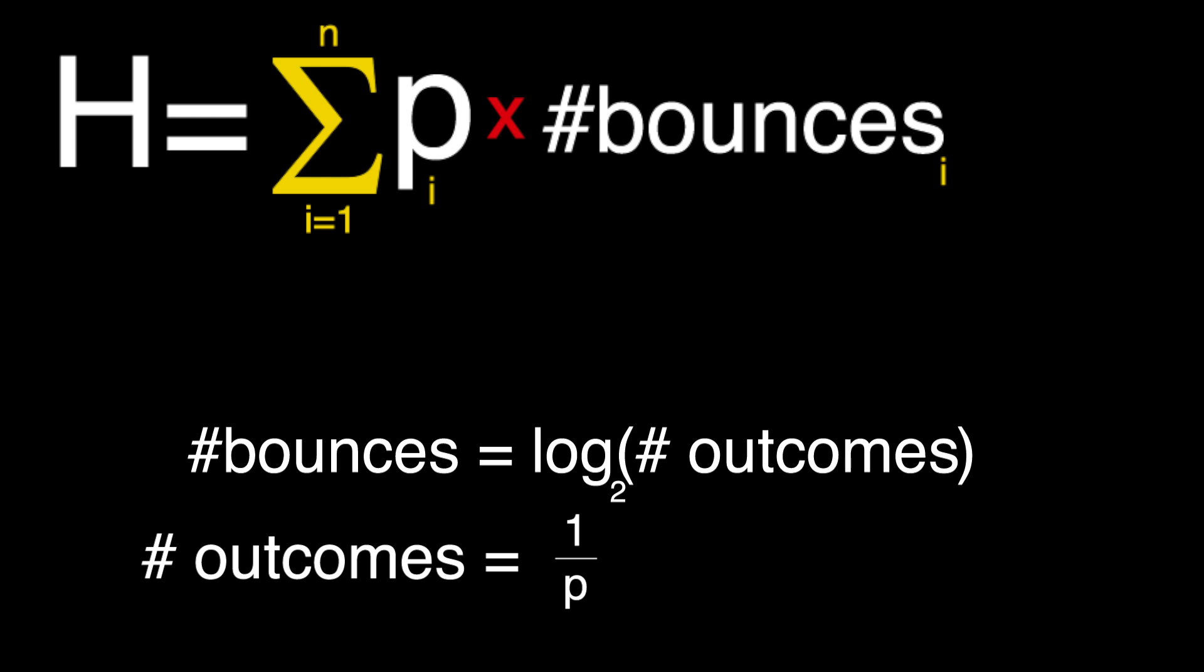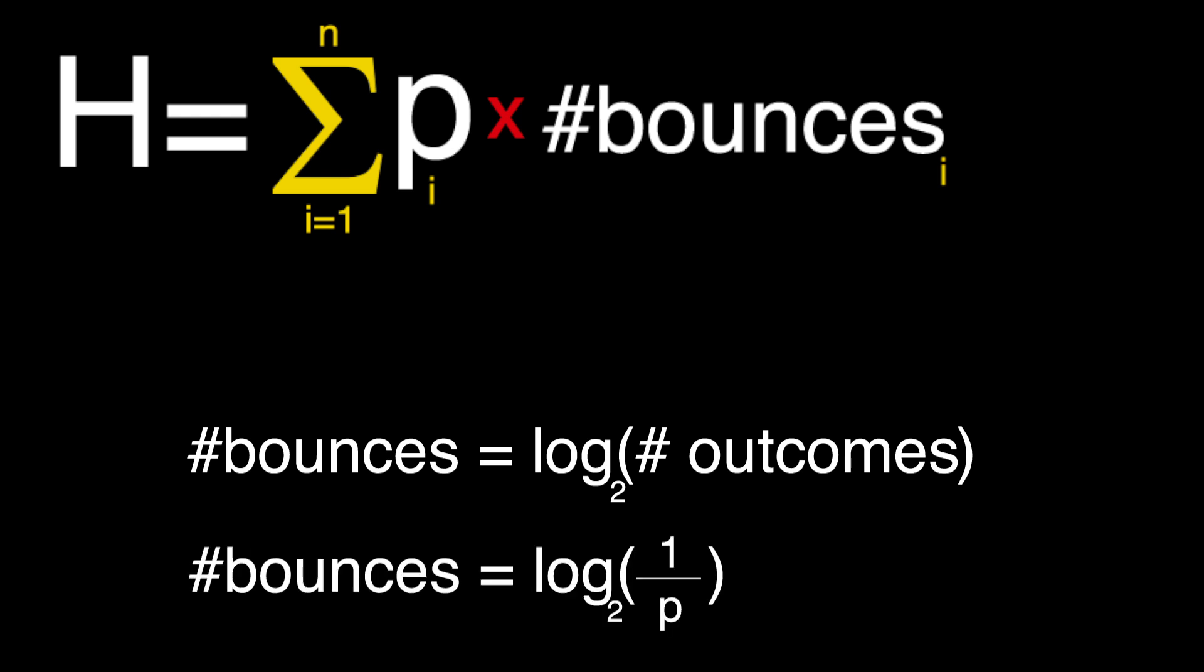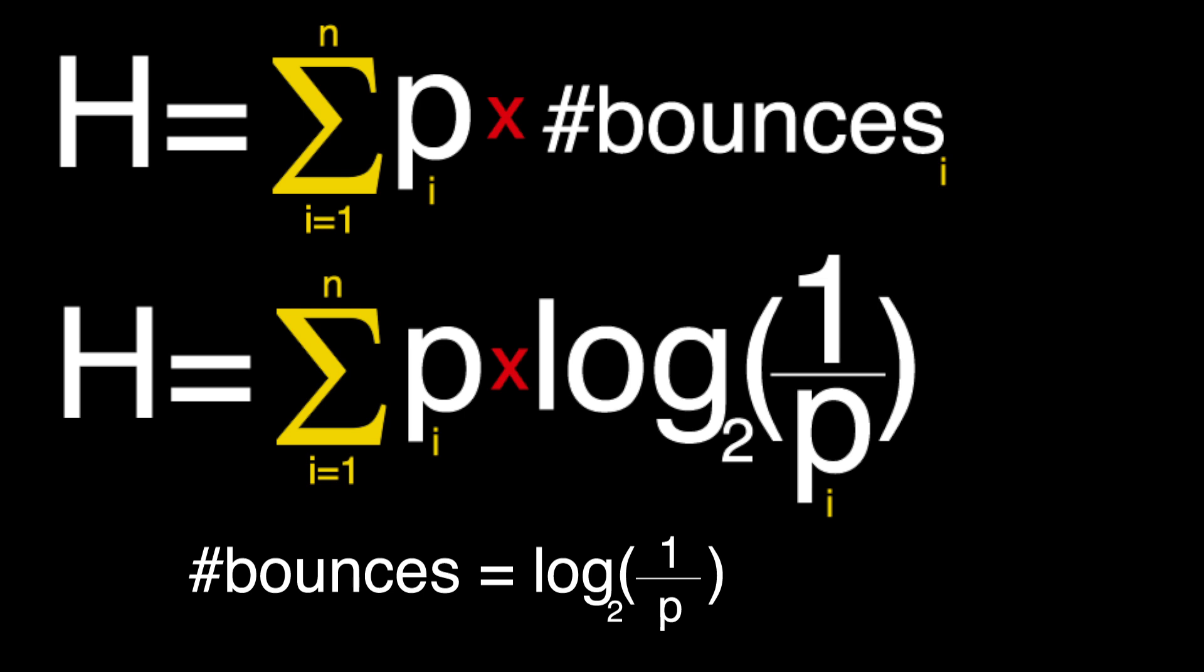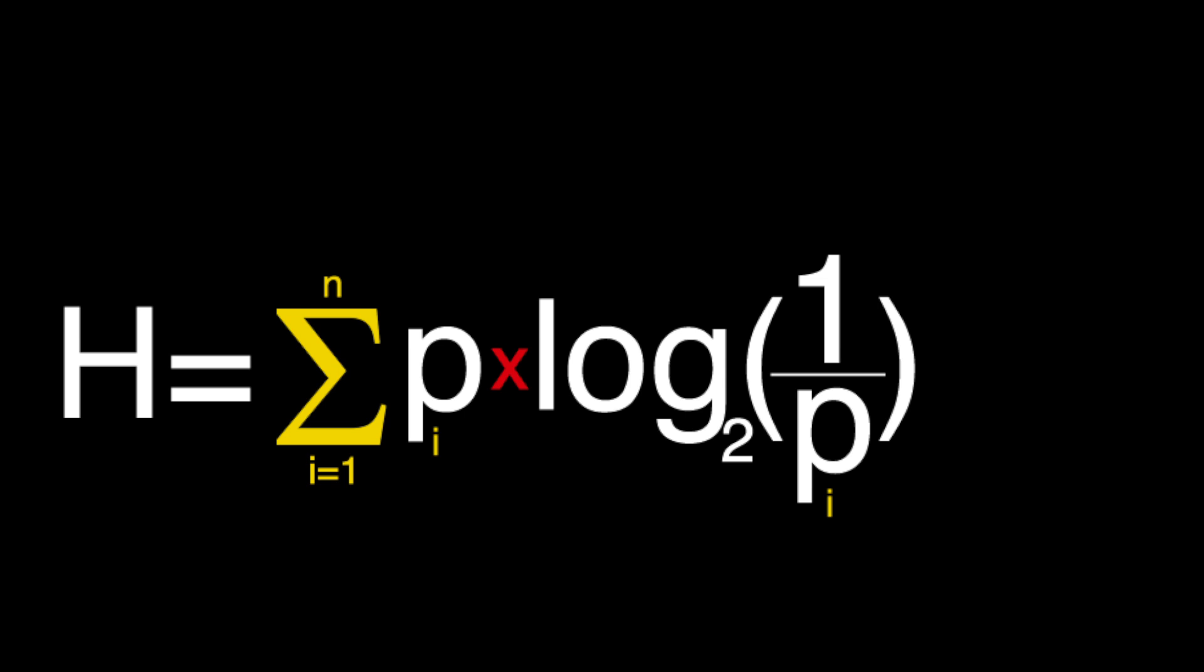Number of bounces actually equals the logarithm base 2 of 1 over the probability of that symbol, which gives us our final equation: entropy or H is the summation for each symbol of the probability of that symbol times the logarithm base 2 of 1 over the probability of that symbol.